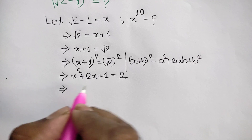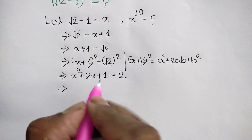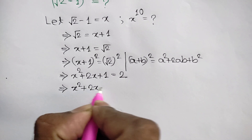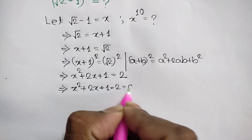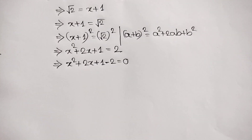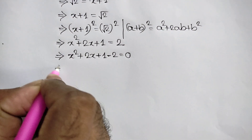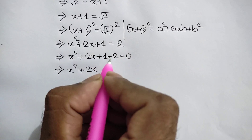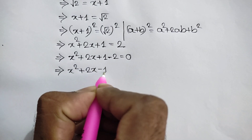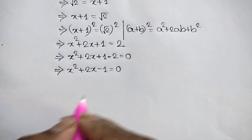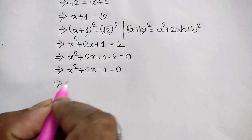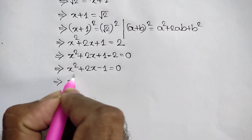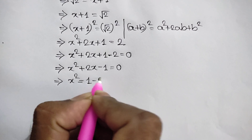Now taking 2 to the left side, we will get x² + 2x + 1 - 2 = 0, which gives x² + 2x - 1 = 0. Taking the negative 1 to the right side, we will get x² = 1 - 2x. This is equation 1.